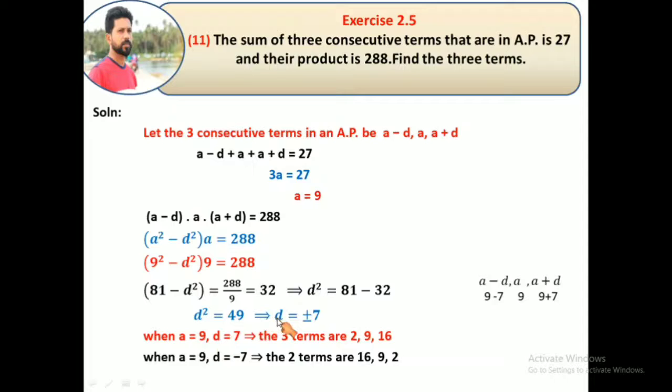Now consider the negative term: a = 9 and d = -7. The three terms are: 9-(-7) = 9+7 = 16, then a = 9, then 9+(-7) = 9-7 = 2. So the terms are 16, 9, 2. Thank you students.